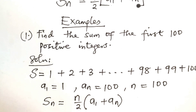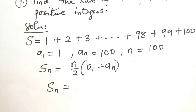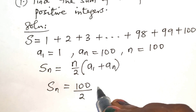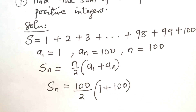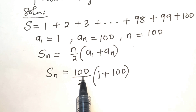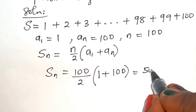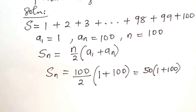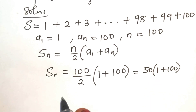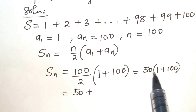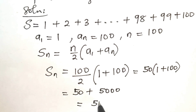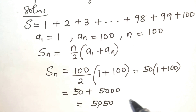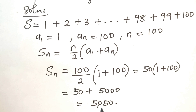If we substitute the values, we will have Sn equal to 100 over 2 into A1 is 1 plus An is 100. If we divide, 100 by 2 is 50, so we have 50 into 1 plus 100. Then 50 times 1 is 50 plus 50 times 100 is 5000, which gives us 5050. This is the sum of the first 100 positive integers.